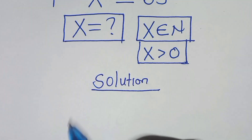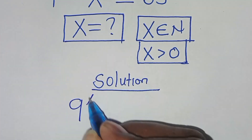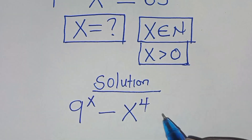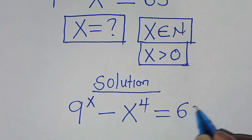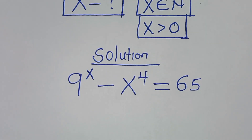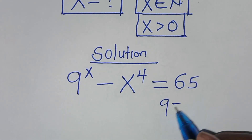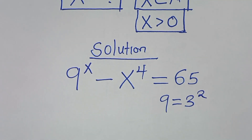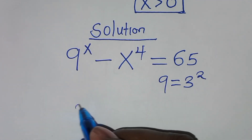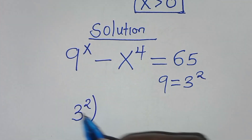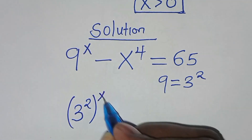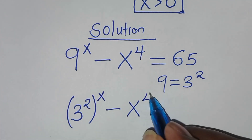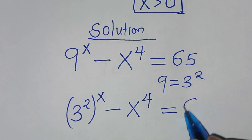We have 9 to the power of x minus x to the power of 4, this is equal to 65. We can express 9 as 3 to the power of 2. So this implies that here we have 3 to the power of 2, raised to the power of x, minus x to the power of 4, this is equal to 65.